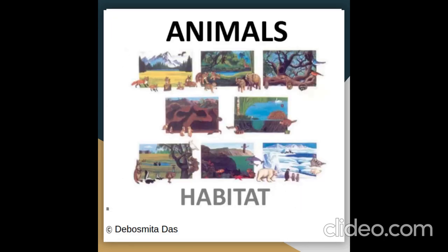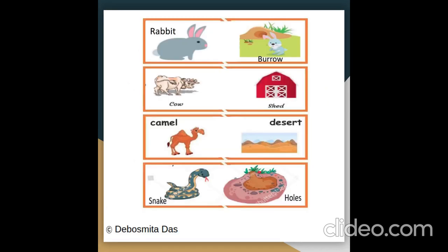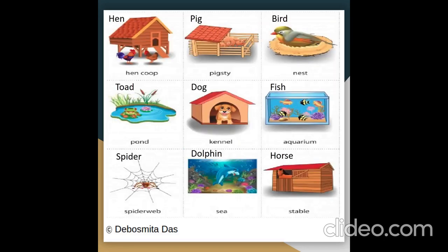Animals and their habitats — the places where animals live. A rabbit lives in a burrow. A cow lives in a shade. A camel lives in the desert. A snake lives in holes. A hen lives in a henhouse.